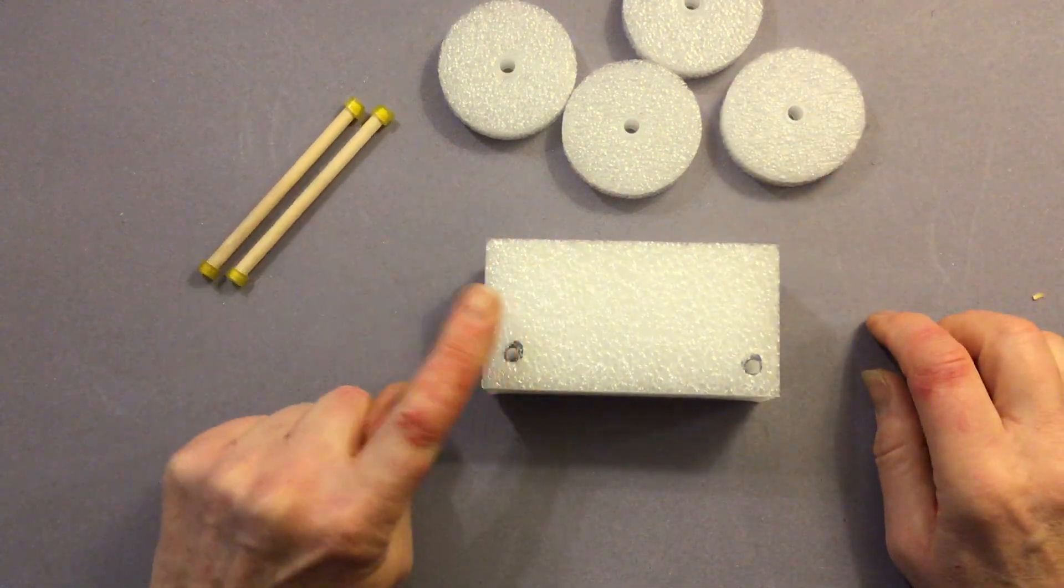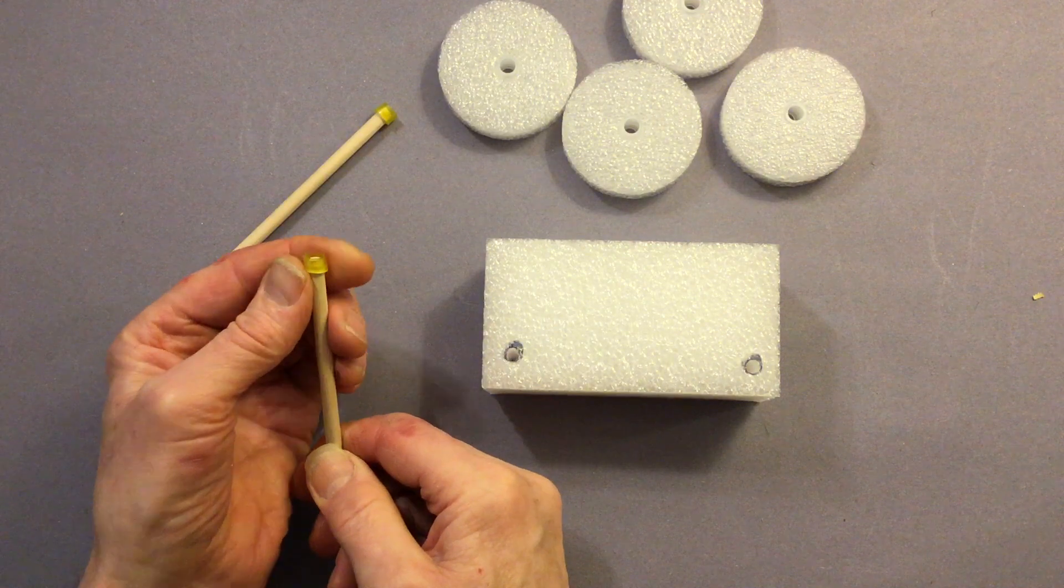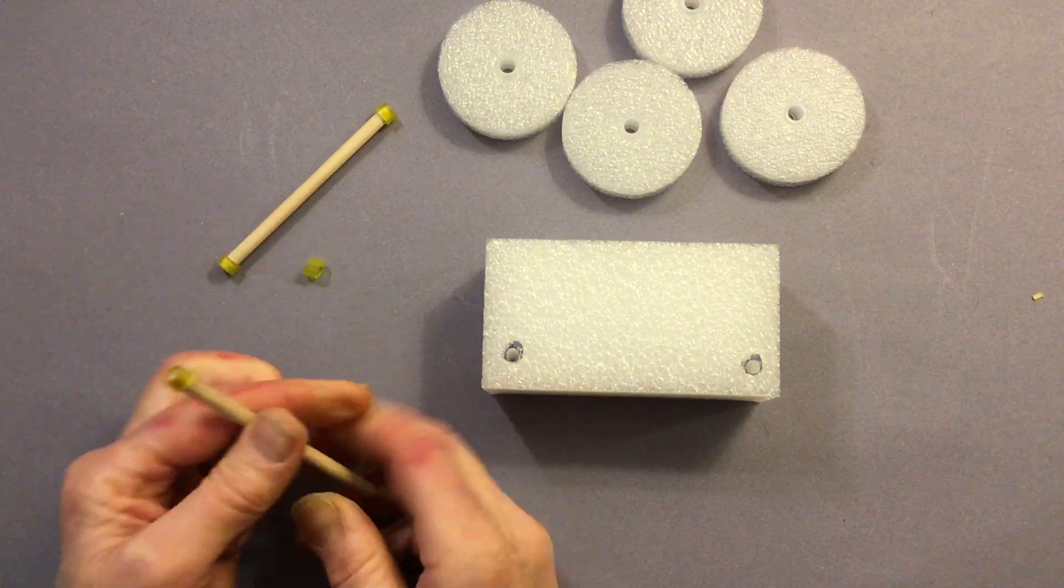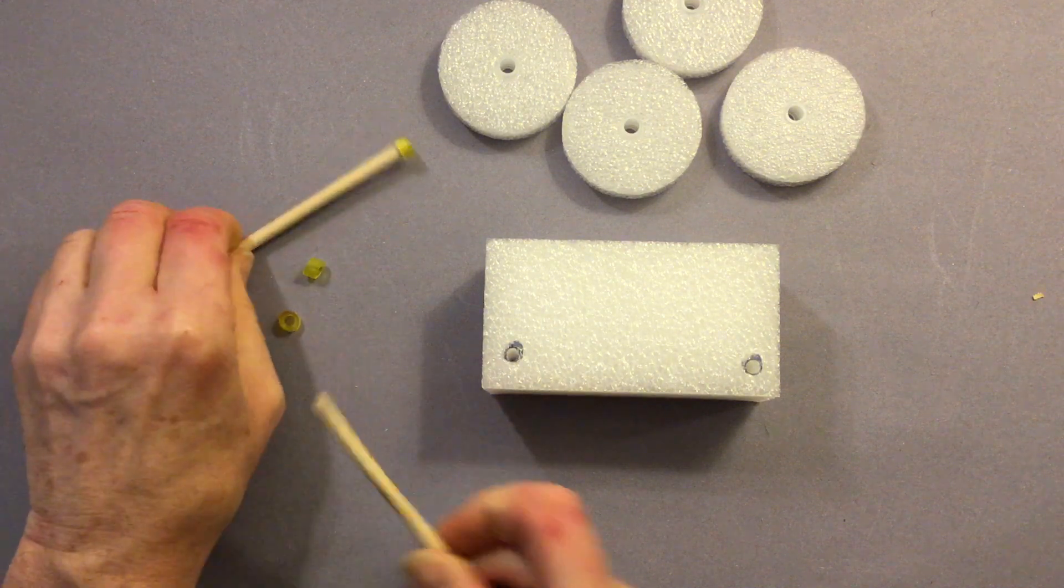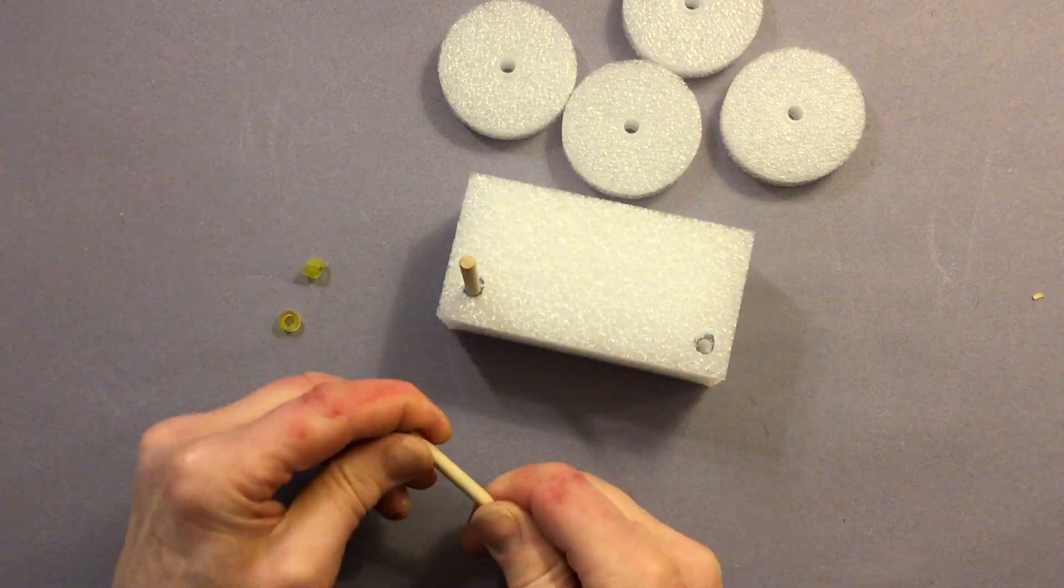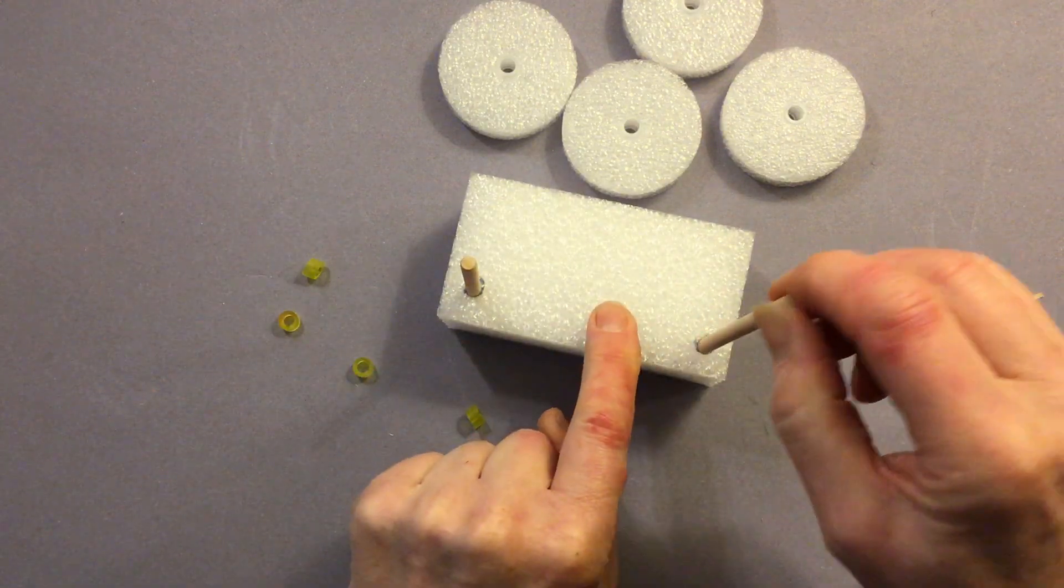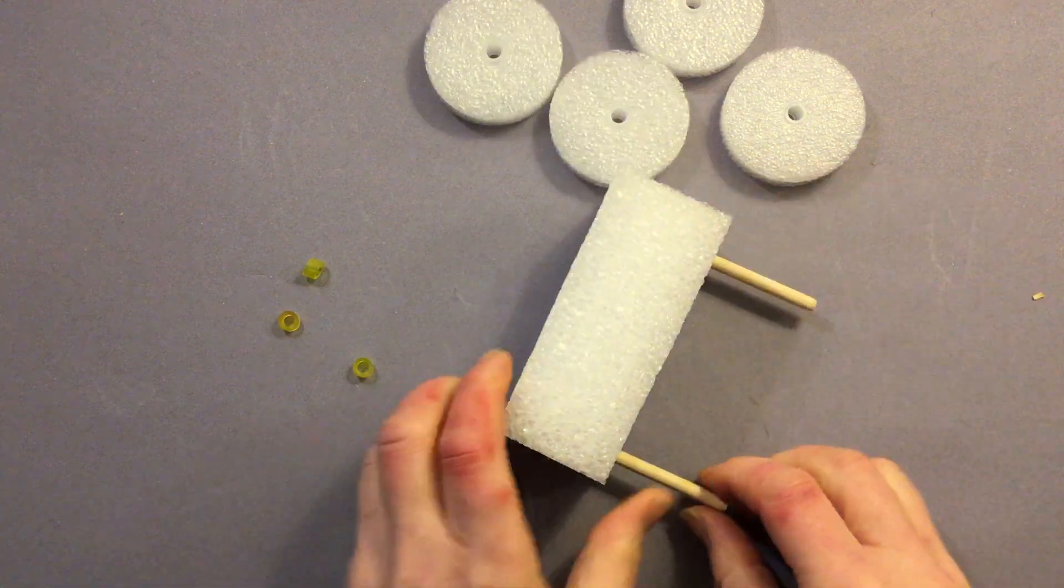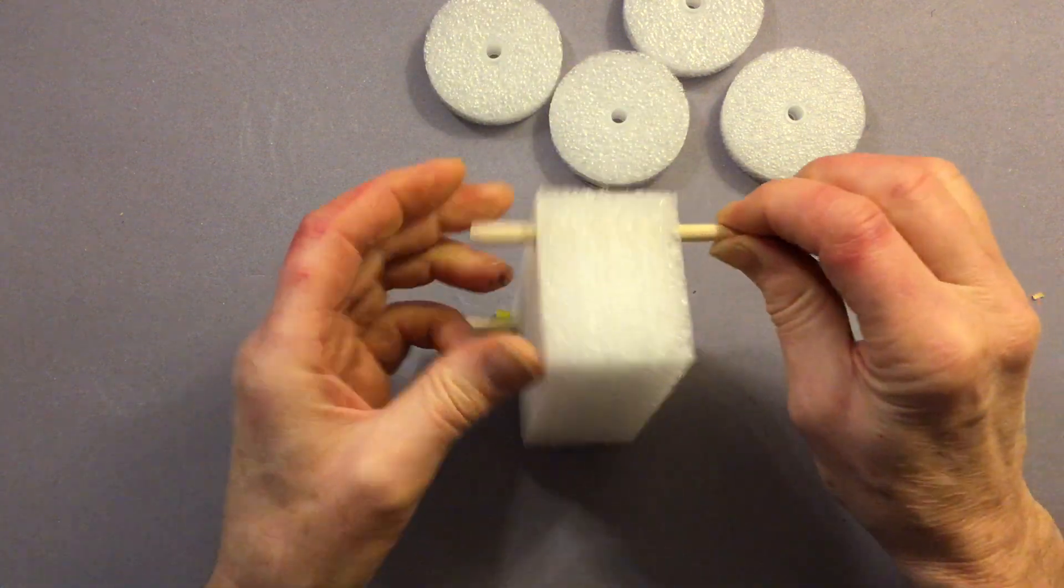Next what we want to do is pop in the two axles so the clips will come off, just wiggle them to turn them off. In goes one axle, in goes the other axle and then we'll pop them through so they're even on each side.